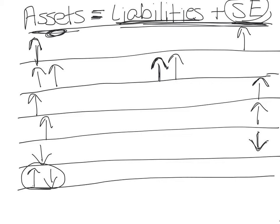When dividends are paid to an owner, you're giving the owner back some of their money. Your cash goes down — you're writing them a check — so assets decrease. Dividends cause retained earnings and stockholders' equity to go down, so stockholders' equity also decreases. You mark assets decrease and stockholders' equity decreases. Hopefully that gives you more insight into this type of problem.